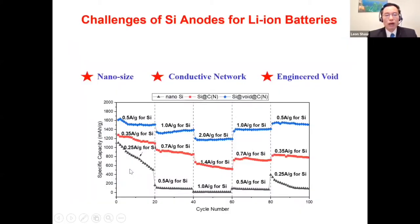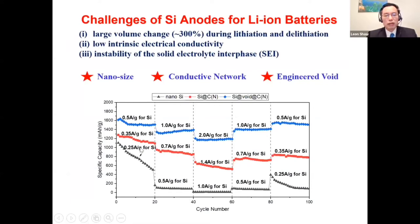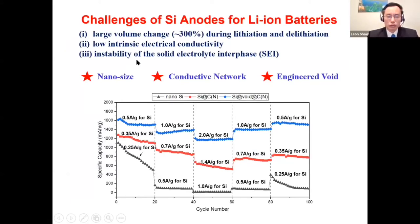However, silicon faces several challenges as an anode material for lithium-ion battery applications. In particular, it has a very large volume change between lithiation and de-lithiation. This huge volume change causes particle fractures as well as particle detachment from the conductive network.